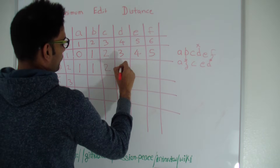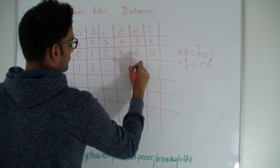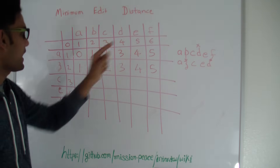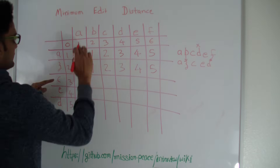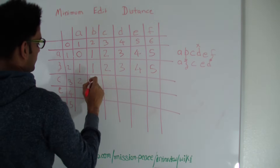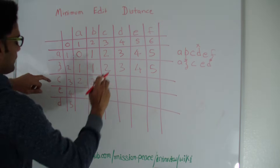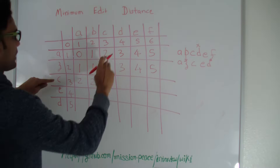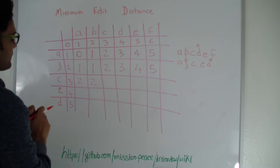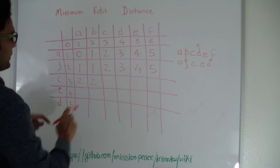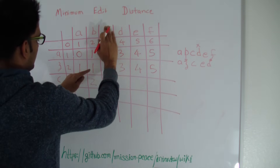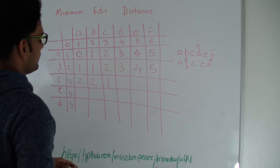Let's bring C into the picture. Since C and A are different, minimum of the three plus one gives two. Since B and C are different, minimum of the three plus one gives two again. Now C and C are the same — what this means is you do nothing to convert this C into this C. The minimum number of operations to convert ABC to AZC is the same as to convert AB to AZ, because C and C are the same and out of the picture. That's one. So if they are the same, you just get the diagonal value. If they are different, you get the minimum of the three plus one.